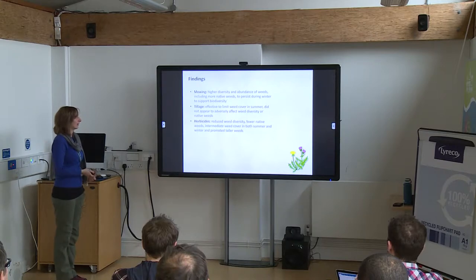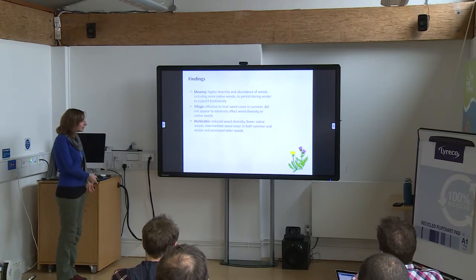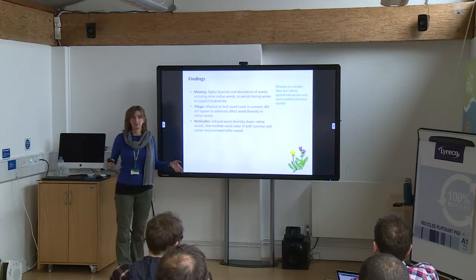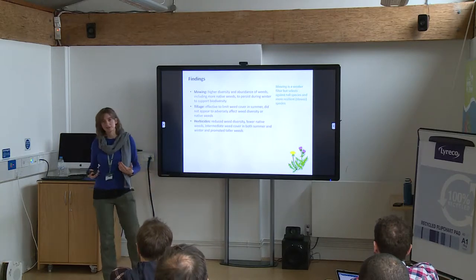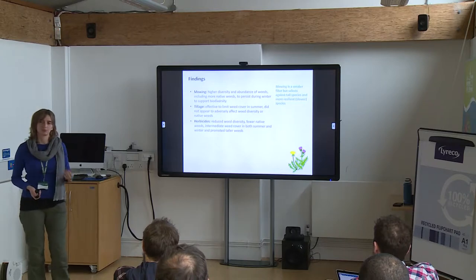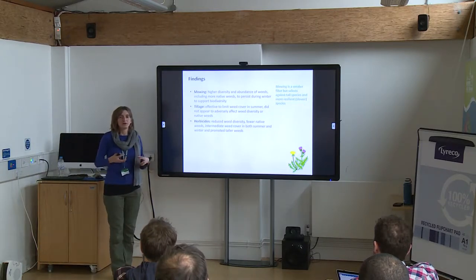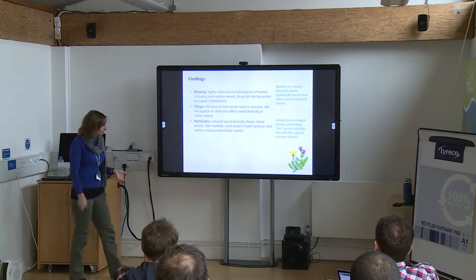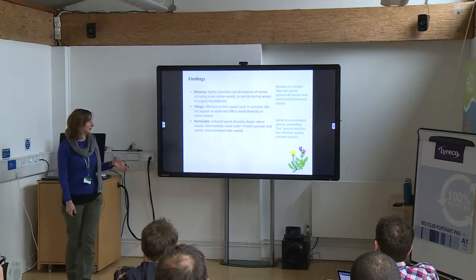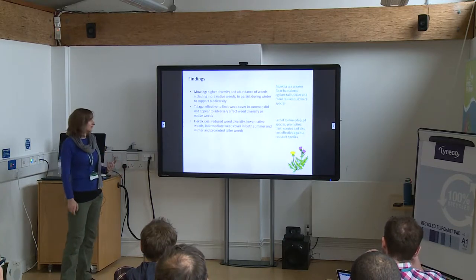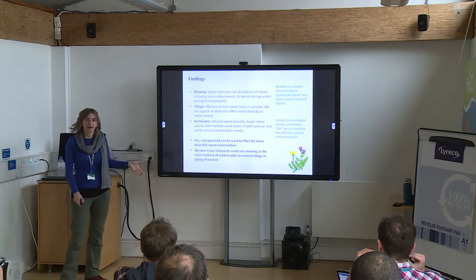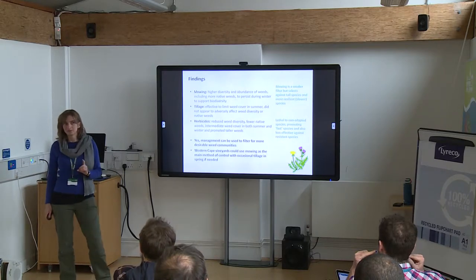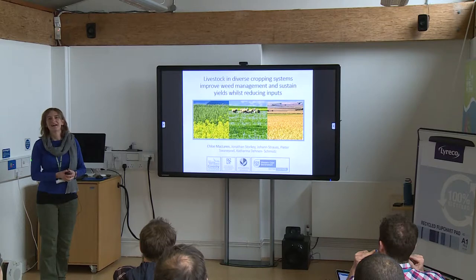So the findings from that study were that mowing makes nice weed communities, herbicides makes annoying weed communities, and if you do need to limit your weed cover then tillage is the least harmful way of doing that. That's partly because mowing is a relatively weak filter — it doesn't kill all species, it allows more to survive so you get more diversity — but it does select against tall species which are problematic, and it encourages species that conserve resources underground so they can re-sprout after mowing. Herbicides are a strong filter to anything not adapted to survive them, but they're not effective against lolium. Management can be used to filter for more desirable communities, and in the Western Cape we think if people focused on mowing as their main weed control everyone would be happier. Interestingly, everyone mows their vineyards in New Zealand.